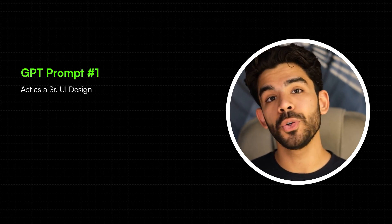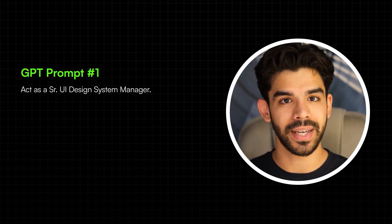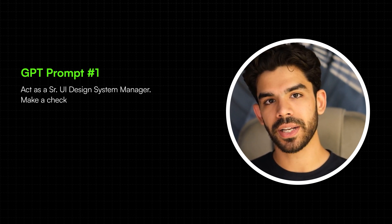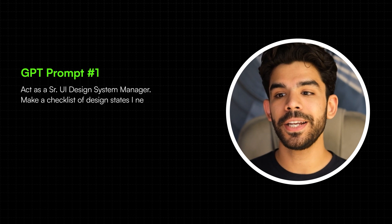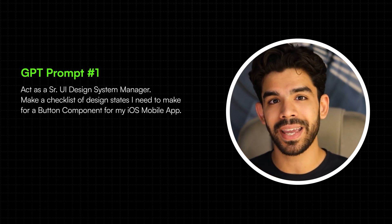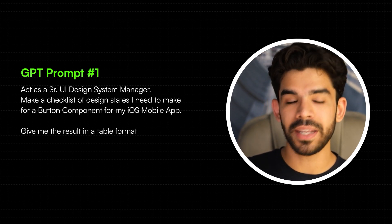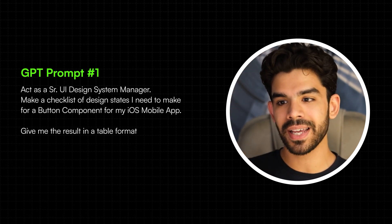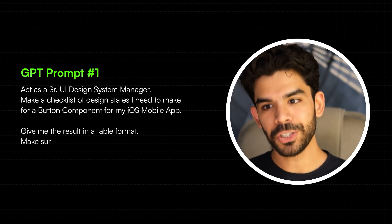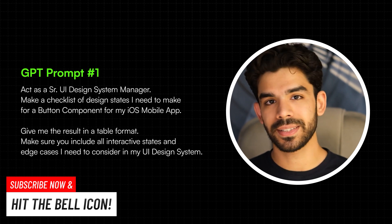This is the prompt: act as a senior UI design systems manager. Notice how I've not asked for a senior designer — I've explicitly called out a UI design systems manager. Make a checklist of design states I need to make for a button component for my iOS mobile app. Give me the result in a table format — this is a very important command, otherwise it gives everything in text. In a table format, digesting that content is way easier. Make sure you include all interactive states and edge cases to consider in my UI design system.